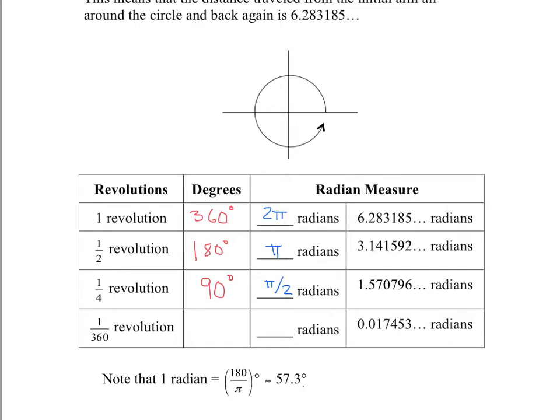And the last one, 1/360th of a revolution. So very small value. That's actually one degree, exactly one degree. And in radian measure, well, you're dividing this in 360 pieces. Therefore, you divide by 360, and you get π over 180 radians. So if you're going just one degree around this circle, you're only traveling 0.02-ish radians around.